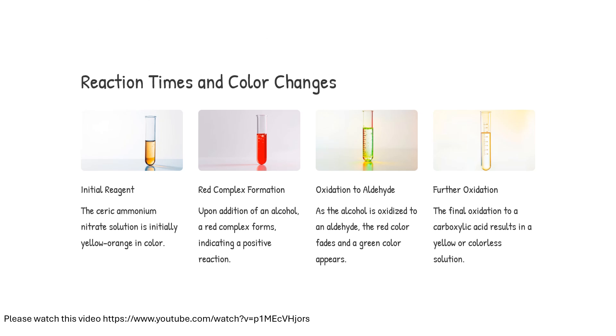The initial ceric ammonium nitrate reagent solution is yellow-orange in color. Upon addition of an alcohol, a red complex forms indicating a positive reaction. As the alcohol is oxidized to an aldehyde, the red color fades and a green color appears. The final oxidation to a carboxylic acid results in a yellow or colorless solution.